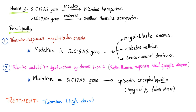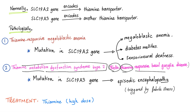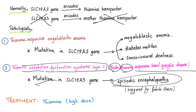Normally, we have two genes: SLC19A2, which encodes for a thiamine transporter, and another gene called SLC19A3, which encodes for another thiamine transporter. The pathology in today's topic — thiamine metabolism dysfunction syndrome type 2, also known as biotin-thiamine-responsive basal ganglia disease — is that we do not have functional SLC19A3. There is a mutation there, therefore we have a defective thiamine transporter, causing symptoms such as episodic encephalopathy, dystonia, seizure, ataxia, etc.